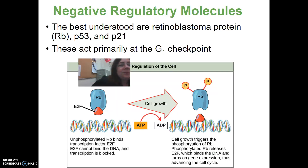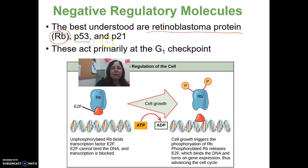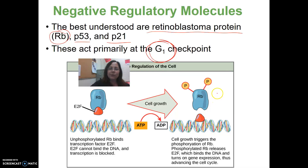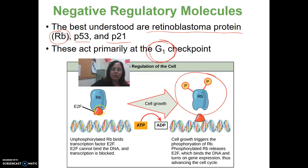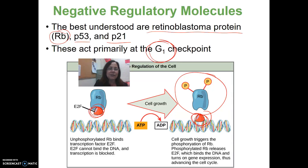There are three negative regulatory molecules: retinoblastoma protein (RB), P53, and P21, and they primarily act at the G1 checkpoint. If RB is phosphorylated — triggered by cell growth — it releases E2F, which it was bound to, and that turns on gene expression and advances the cell cycle to the next stage. But if RB remains bound to the E2F transcription factor, the cell cycle will not continue to the next stage.